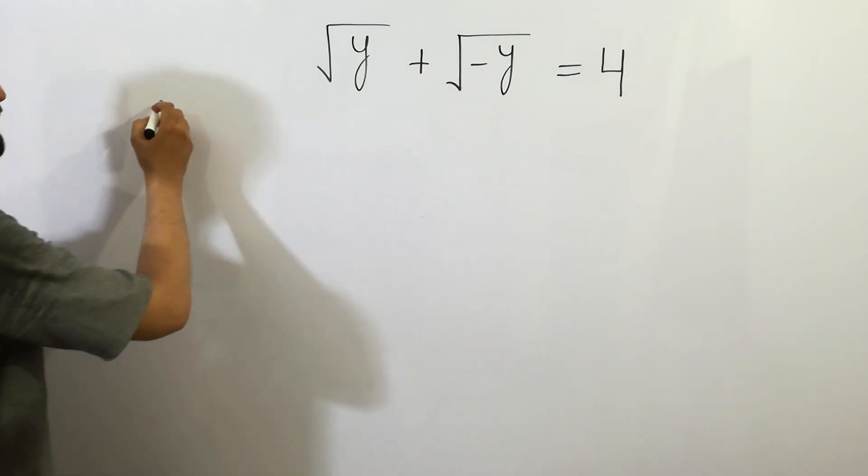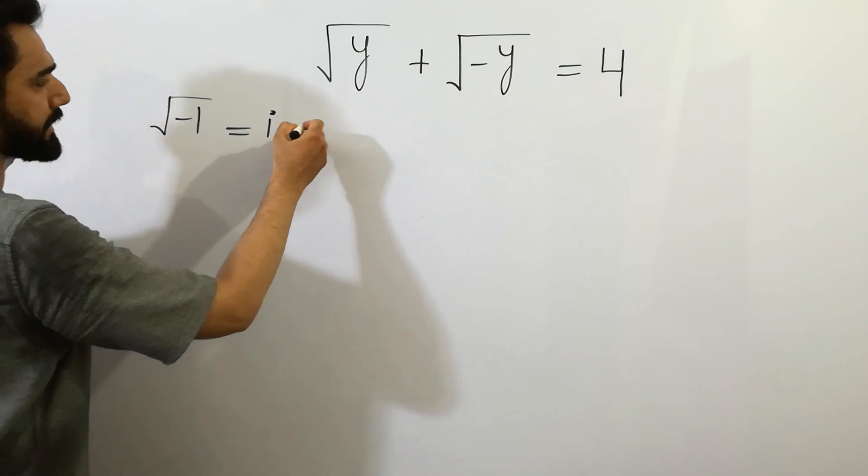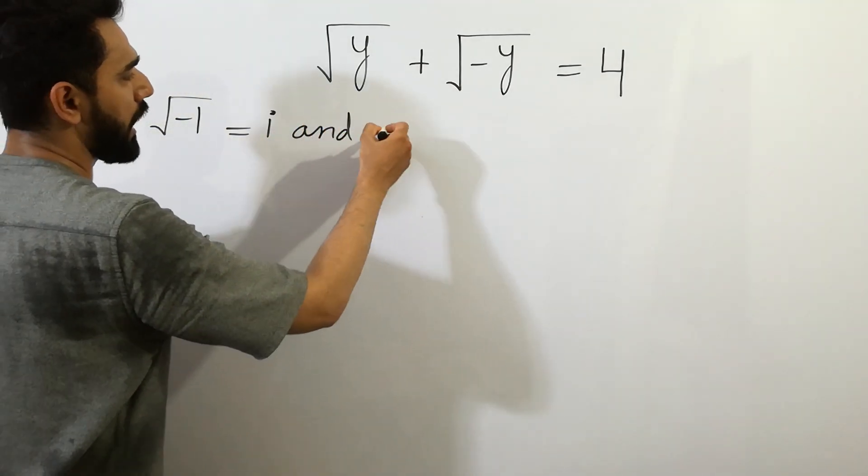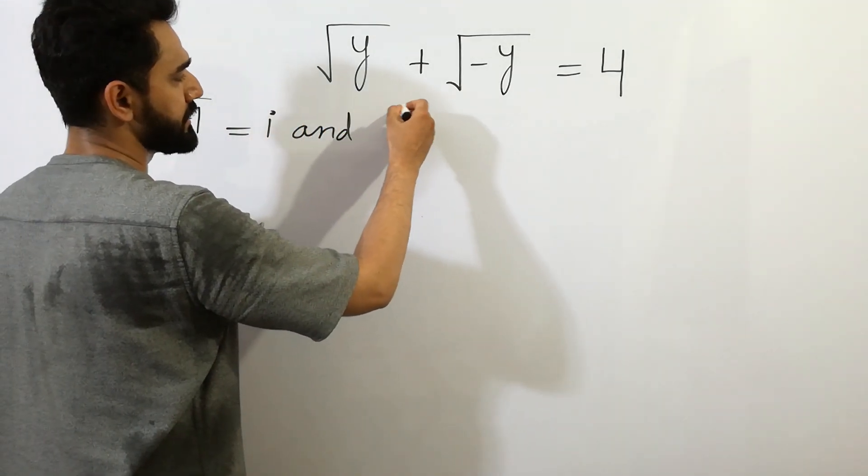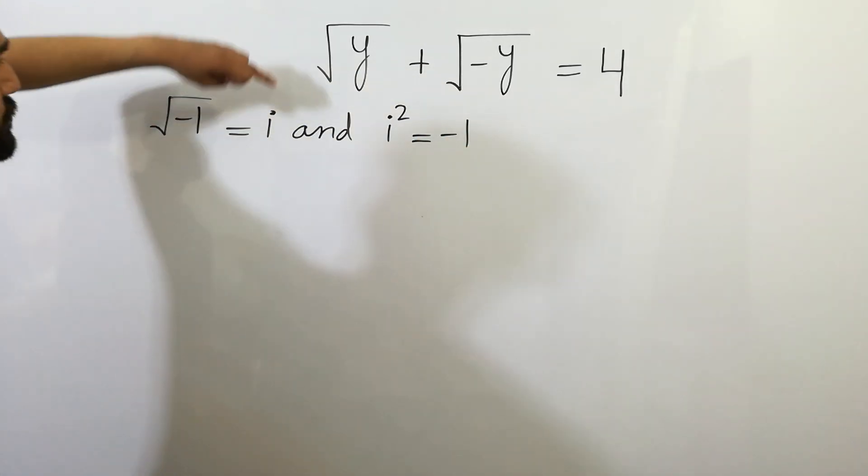As we know that in complex numbers, square root of minus 1 is equal to i and i squared is equal to minus 1. So we can easily solve this.